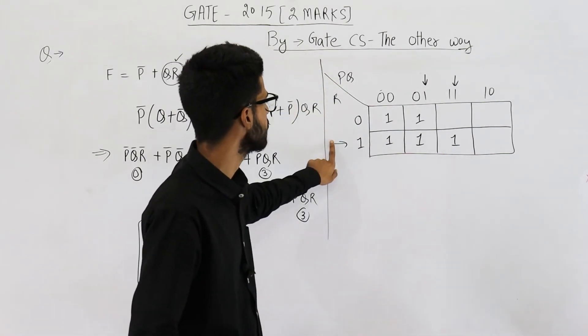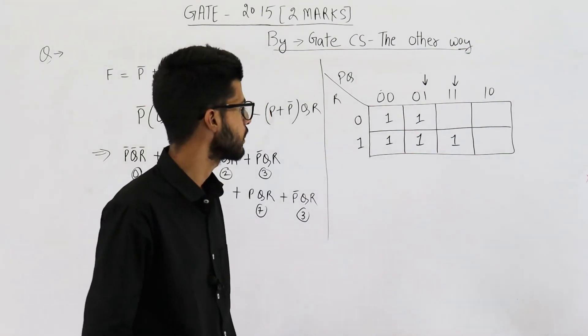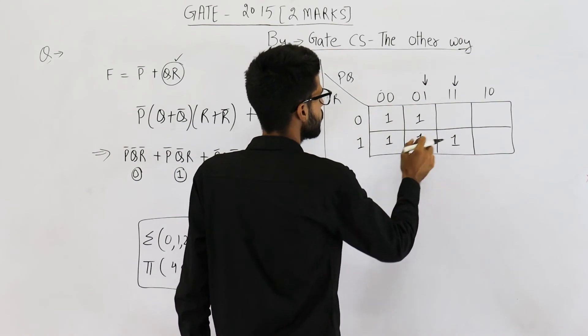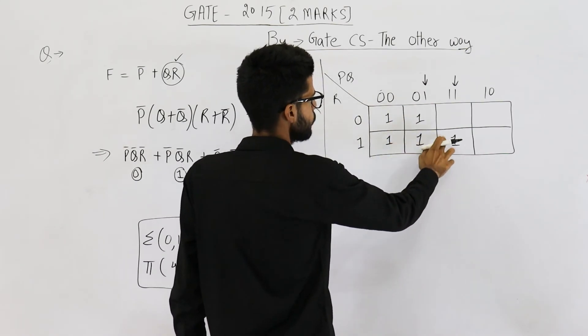From here also, you can get the maxterms as well as minterms. Let us find the minterms first. It is these 5 cells. This is 0, this is 1, this is 2, this is 3 and this one is 7.